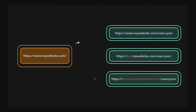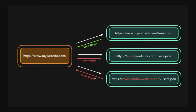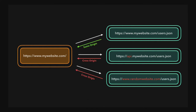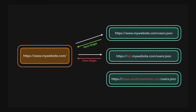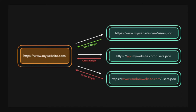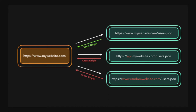For same origin: mywebsite.com to mywebsite.com/user.json — domain, protocol, and port are all the same. Cross-origin examples: api.mywebsite.com (different subdomain) or https://www.randomwebsite.com (different protocol and domain). From your website, you'll only be able to talk to these cross origins in a specific case: if the response from those servers explicitly allows it — they must send a header saying this client is allowed to talk to this server.